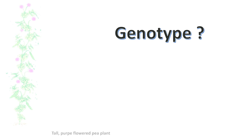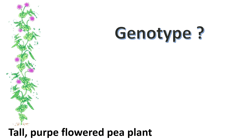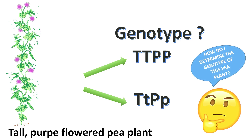Hi guys, can you tell me the genotype of this individual? That's true, you can't. This is because a tall purple flowered pea plant can either be of this genotype or this genotype. So, how do you determine the genotype of an individual with dominant phenotype?